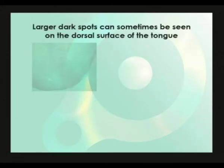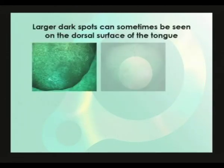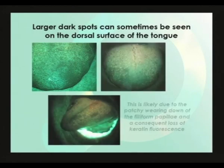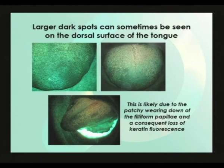Larger dark spots can sometimes be seen on the dorsal surface of the tongue. This is likely due to the patchy wearing down of the filiform papilla from use of the tongue, resulting in a dark patch due to the loss of keratin fluorescence from the filiform papilla.